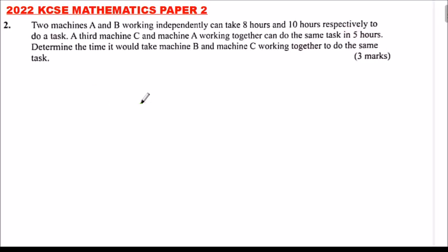This is 2022 KCSE Mathematics Paper 2. We are told two machines A and B working independently can take 8 hours and 10 hours respectively to do a task. A third machine C and machine A working together can do the same task in 5 hours. Determine the time it will take machine B and machine C working together to do the same task, and you get yourself 3 marks.